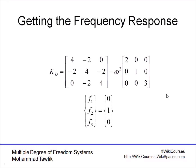Now let's assume we only have a force acting on the second mass, f2, while f1 and f3 are zero. The excitation force on m2 is 1 times cosine(omega t), or in general complex form, 1 times cosine(omega t) plus i sine(omega t).